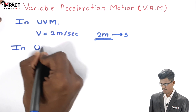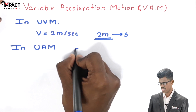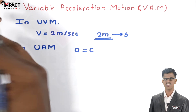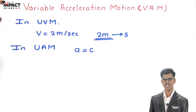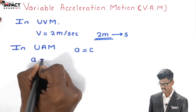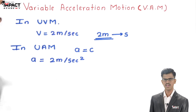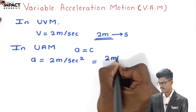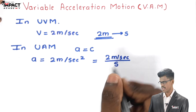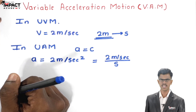In uniform acceleration motion, as the name suggests, in this motion acceleration is constant. Means the rate of change of velocity of the particle is constant. Since acceleration is constant, if the particle has acceleration 2 meters per second squared — means 2 meters per second per second — in every second the velocity of the particle increases by 2 meters per second.